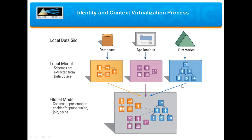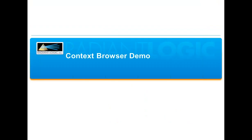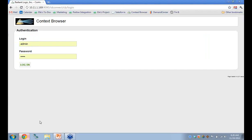Here's a quick diagram showing how we achieve this. RadiantLogic's Identity Service creates a global data model where each icon represents a table of structured data. Radiant aggregates all information from your local data silos, extracts the schema from the data source, and creates a global model where information can be organized hierarchically. Radiant can then link identities to context by regrouping objects into sentences and sentences into context for a complete view of information. To give you an example of how this works, I'm going to show you a demo of our context browser.